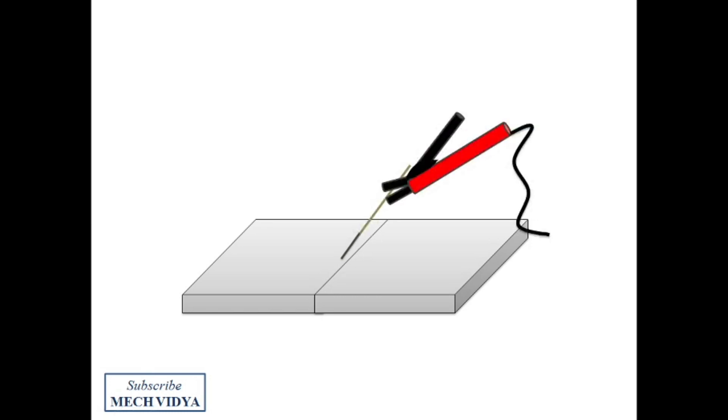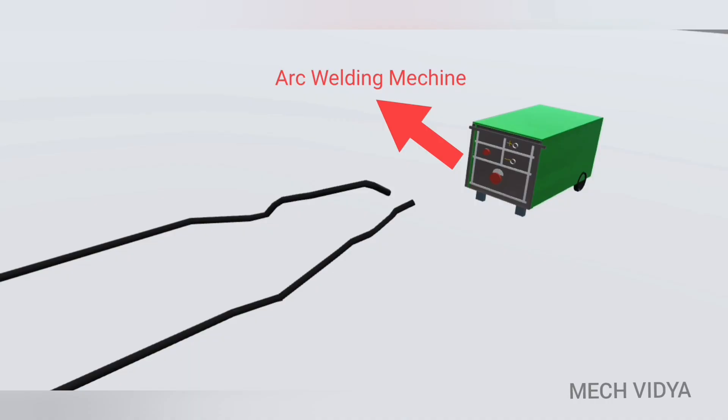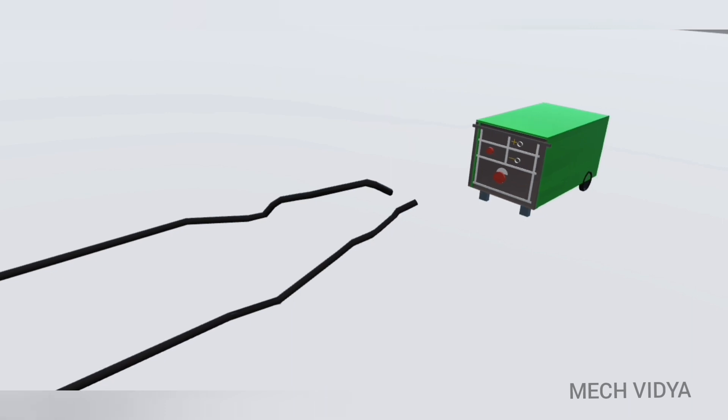The arc is produced between an electrode and the metal workpiece to be joined. The setup consists of a generator; we can either use direct current or alternating current in arc welding.